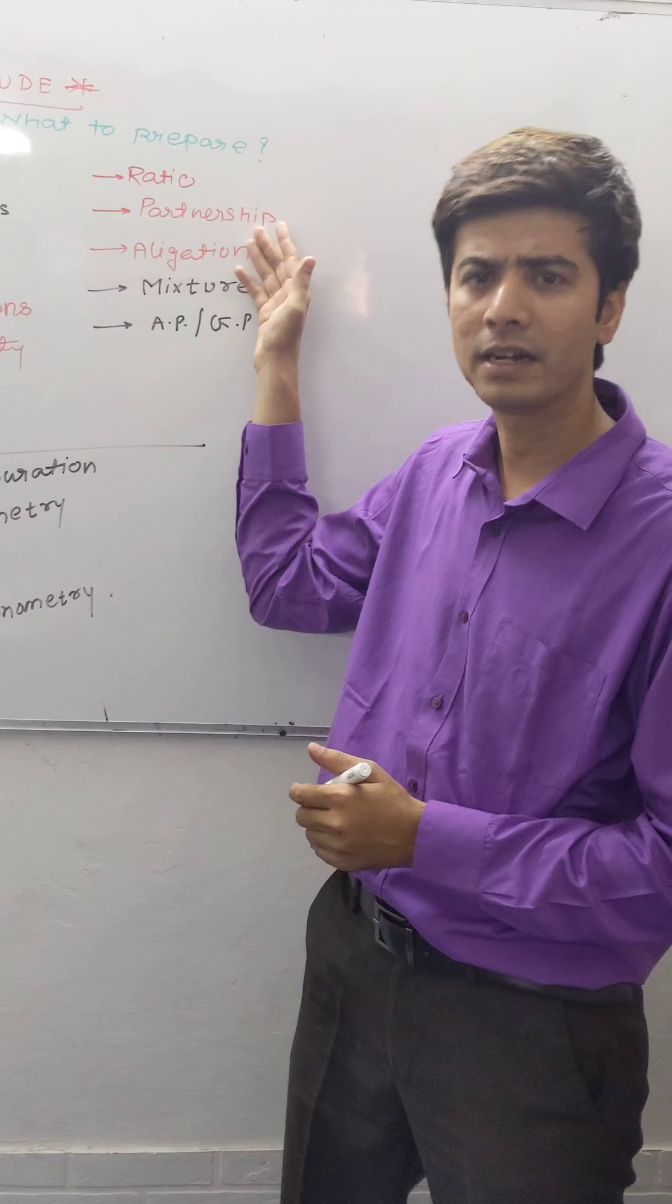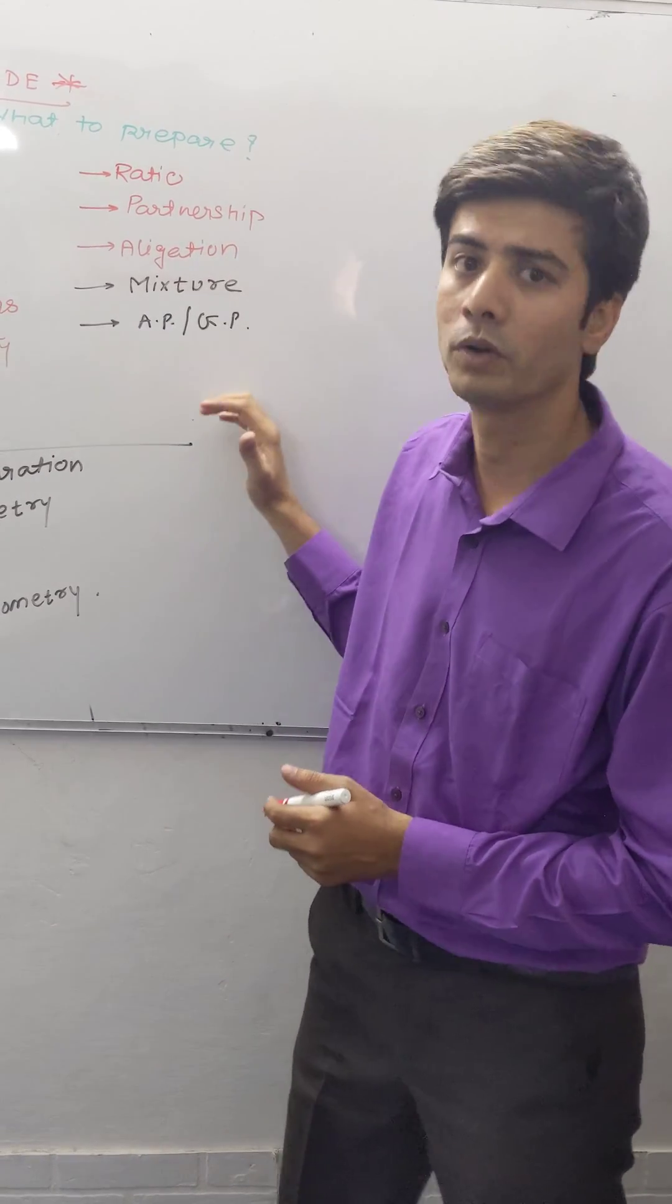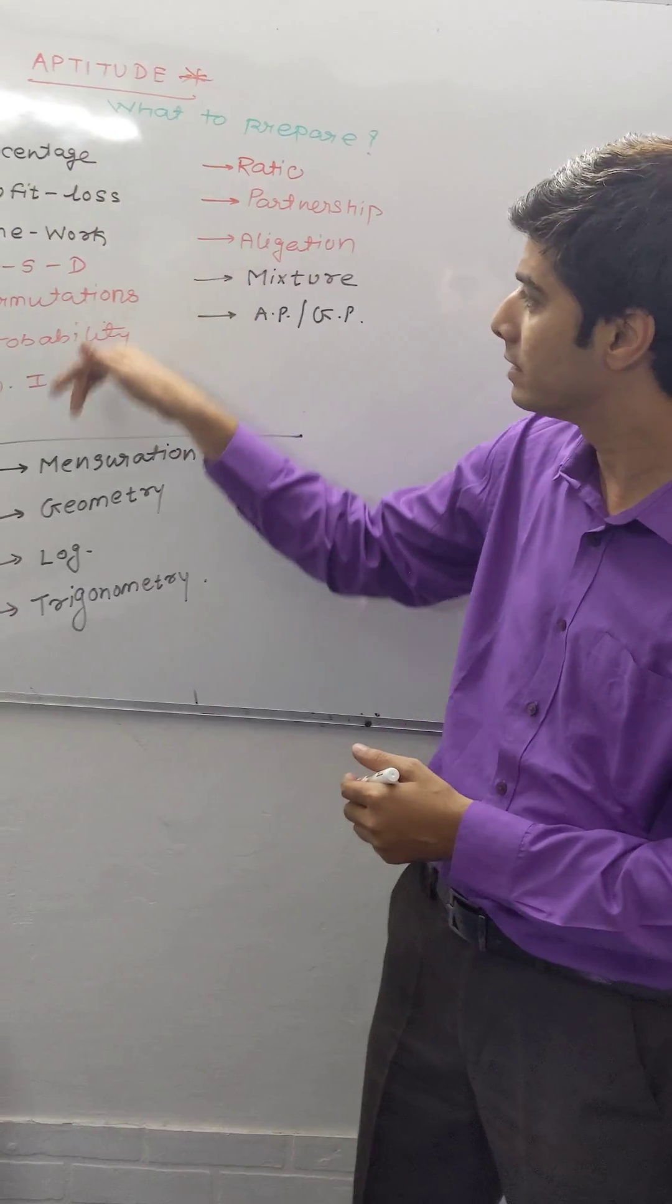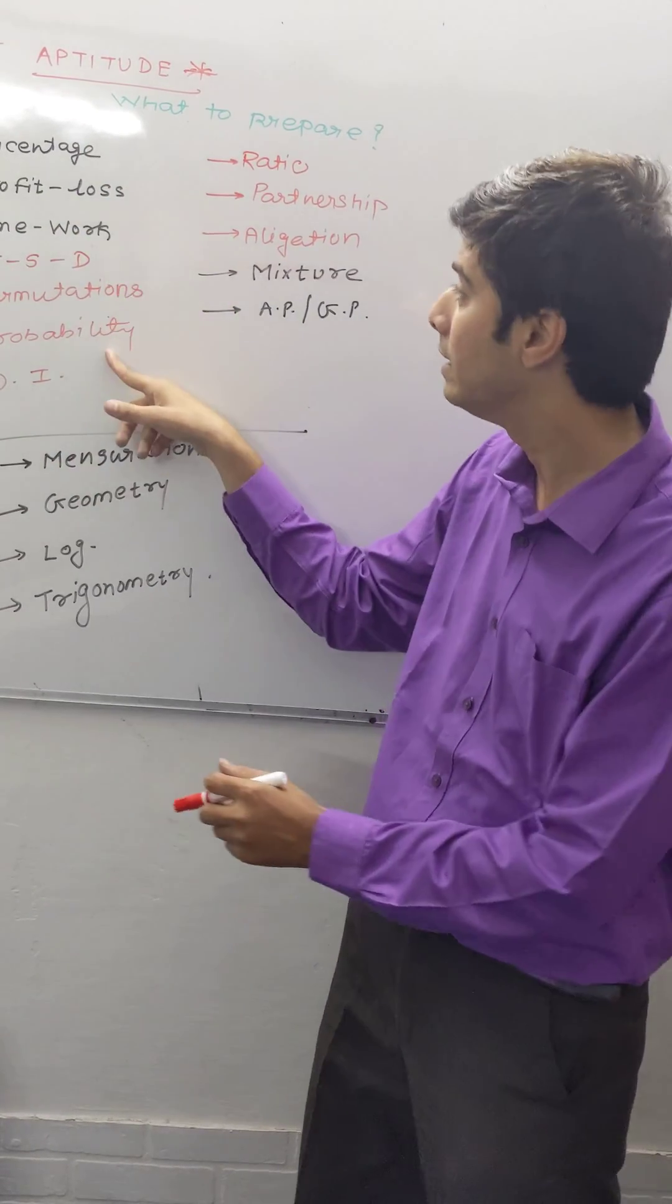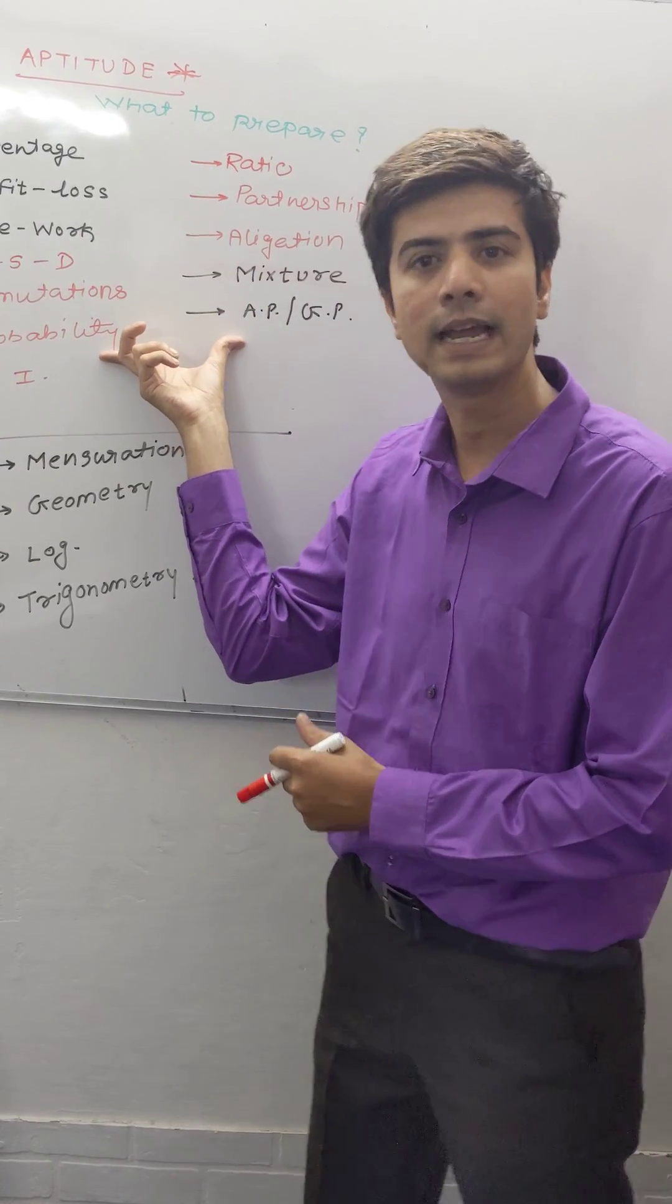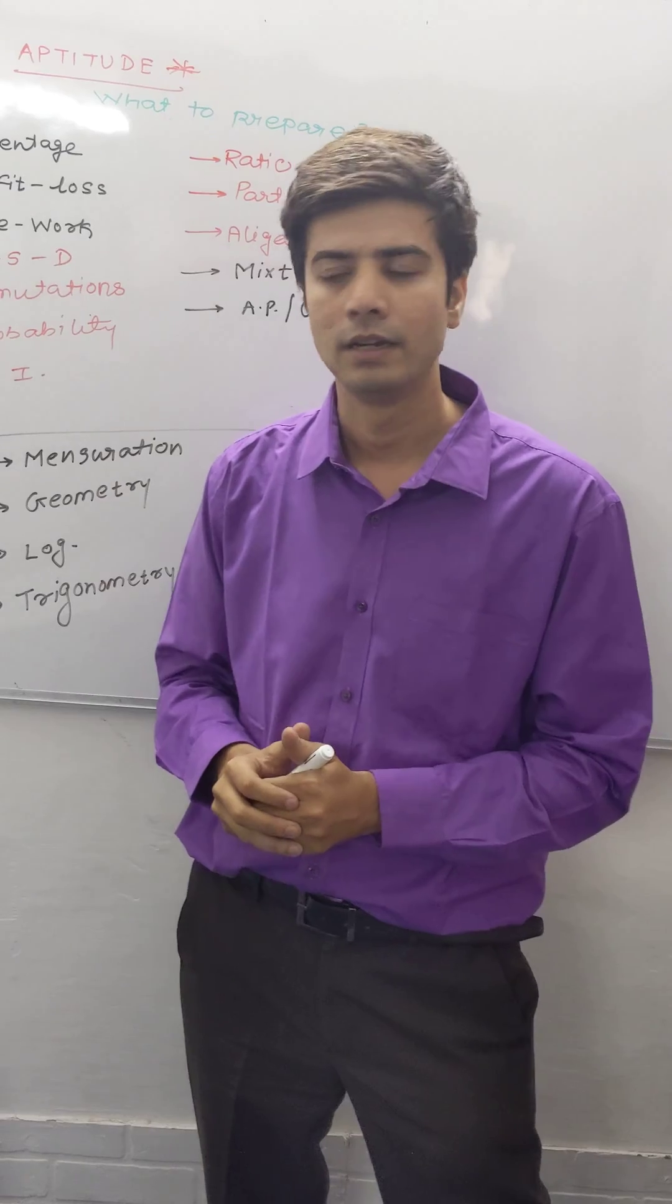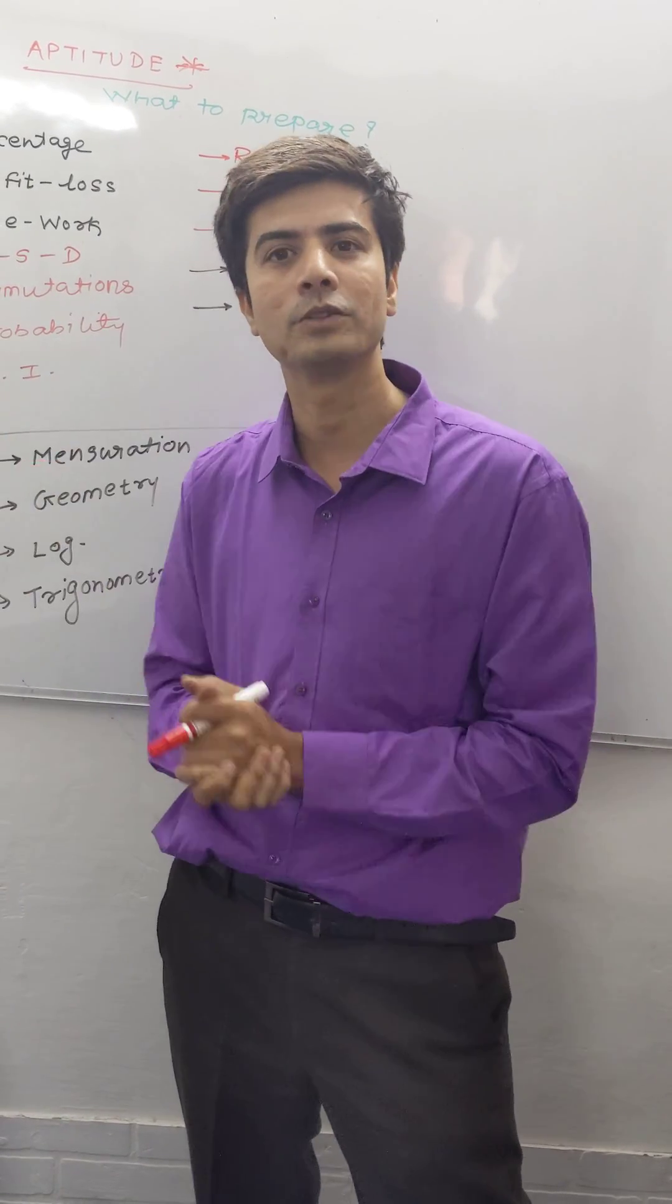Topics like ratio, partnerships, allegation, mixtures, and progression. If you have done all this from Indiabix, if you have solved all this from RS Aggarwal, then you can jump to these 5 topics. If this is done, I can say that 80% of your campus selection is confirmed. Lots of students always feel that geometry is boring and very difficult to score well in.